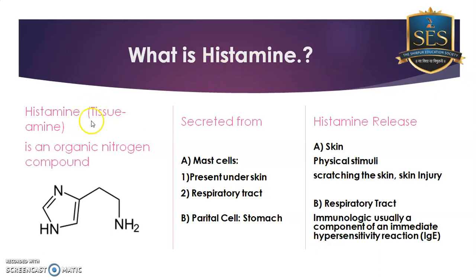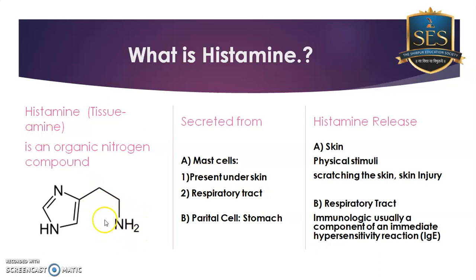'Hist' means tissue — histamine is normally found in plant tissue as well as animal tissue. It is not only found in humans but also in plants. The word 'hist' reflects its presence in tissue, and 'amine' indicates it contains an amino functional group.